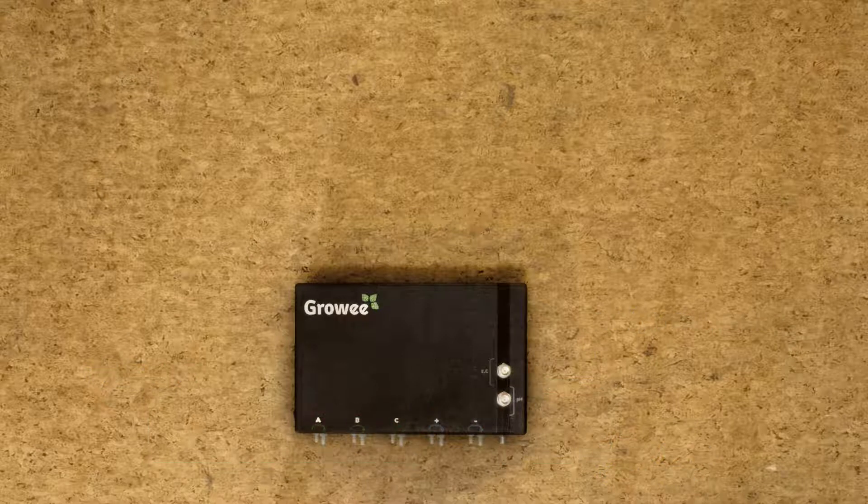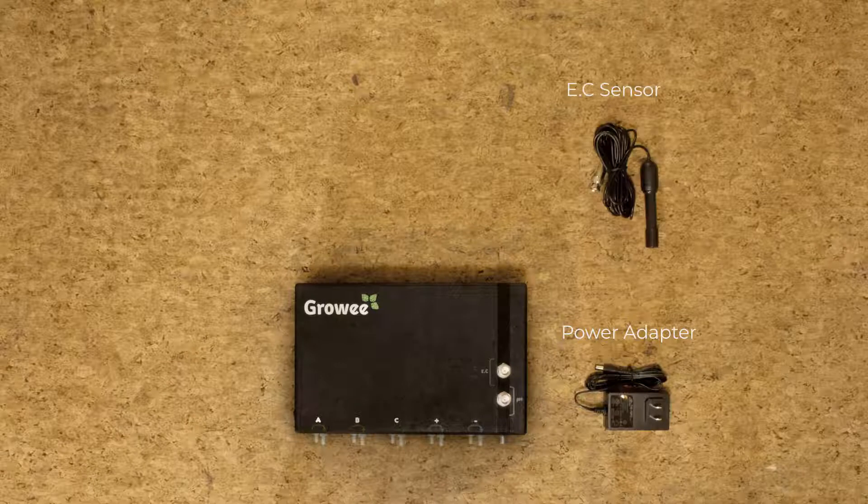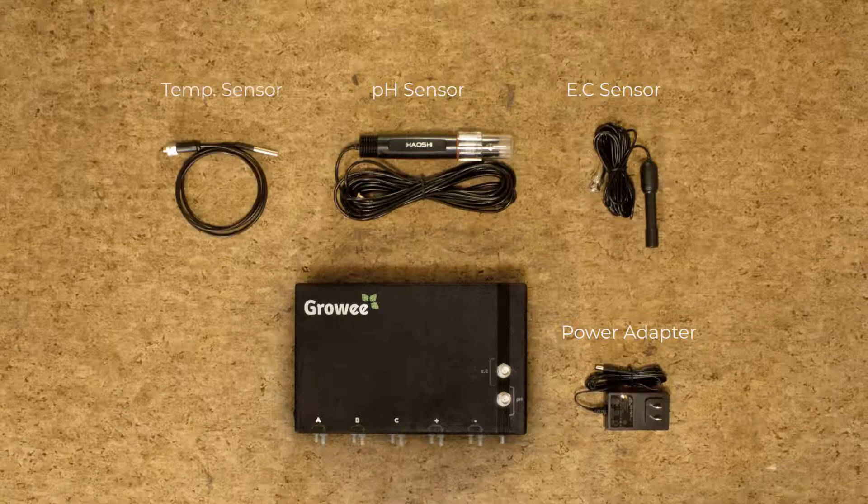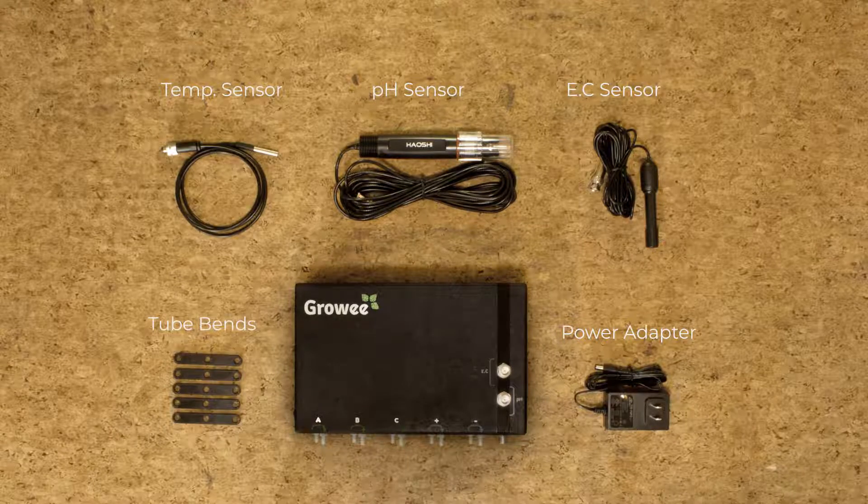Other than the device, you'll also find a power adapter, an EC sensor, PH sensor, water temp sensor, and five tube bends.